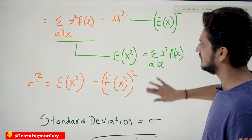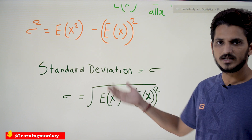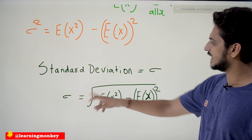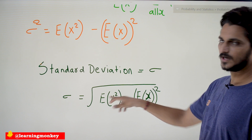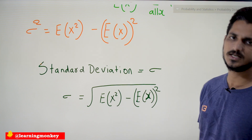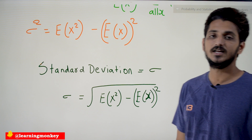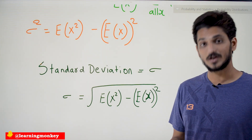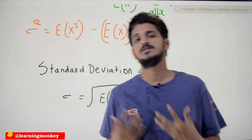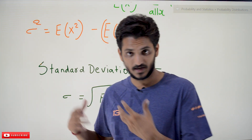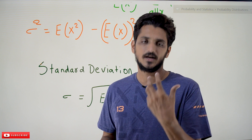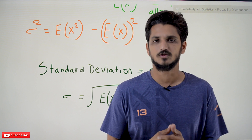Coming to standard deviation — the square root of variance is called standard deviation. So sigma equals the square root of E(X squared) minus (E(X)) squared. This is the standard deviation for our probability distribution. In our next class we are going to do some practice examples, and these basics will help you a lot in understanding binomial and Poisson distributions.